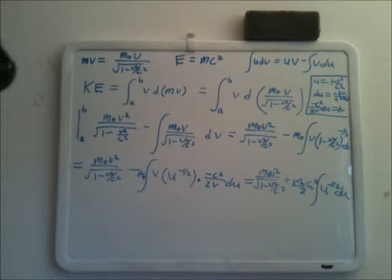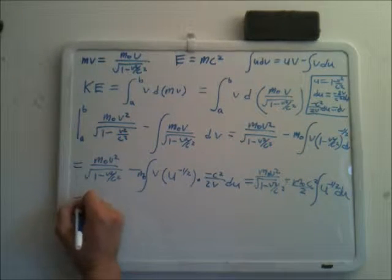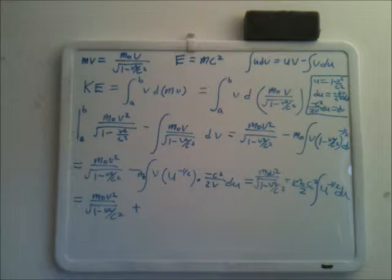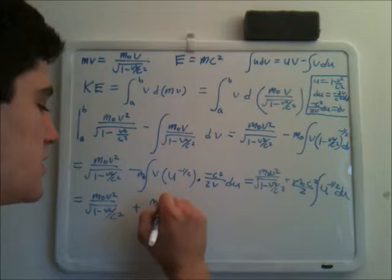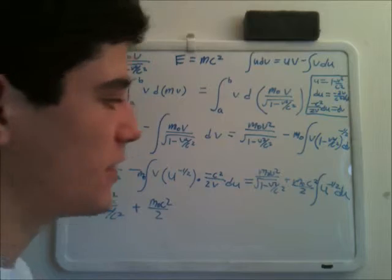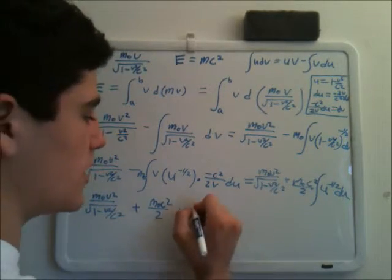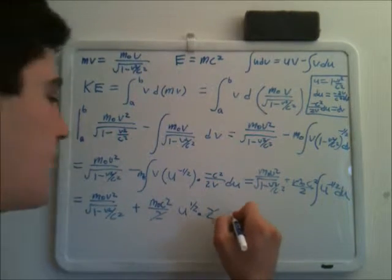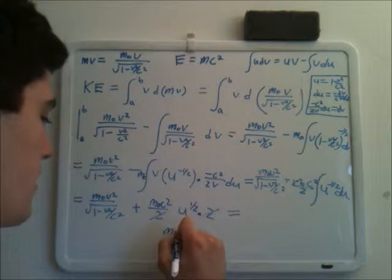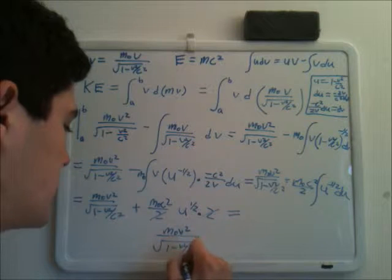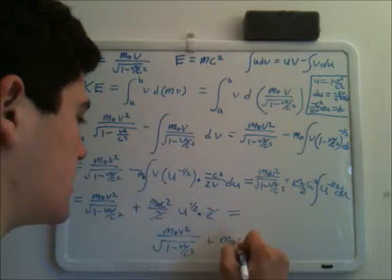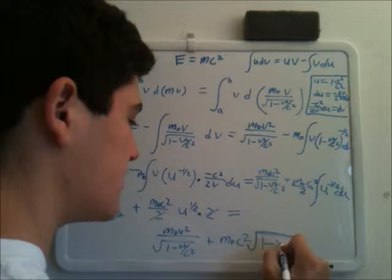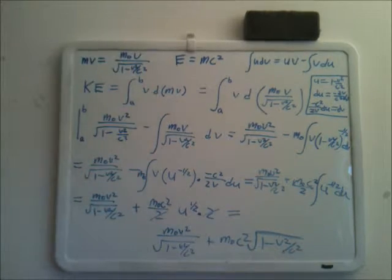Now it's much easier to integrate. We get m₀v squared over the square root of 1 minus v squared over c squared, plus m₀c squared over 2 times the integral of u to the negative one-half du. Integrating gives u to the one-half divided by one-half, which becomes multiplied by 2, and the two's cancel. Finally we get m₀v squared over the square root of 1 minus v squared over c squared plus m₀c squared times the square root of 1 minus v squared over c squared.